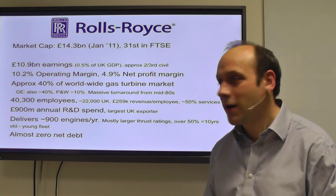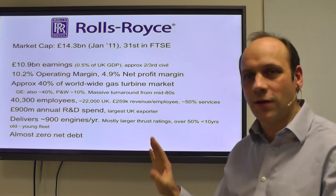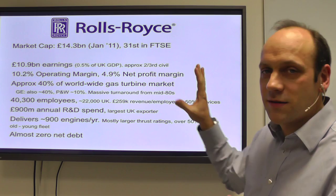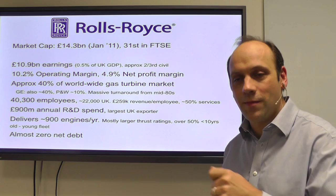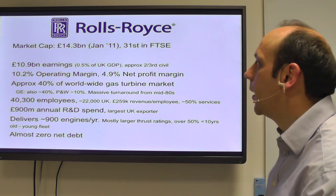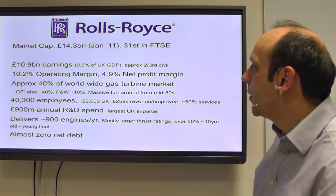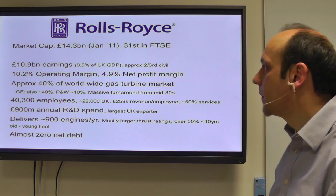About two-thirds of those earnings are civil. They do have some defence — military engines and submarine reactors — but mostly they are a civil gas turbine company. The car company is actually owned by BMW and based in Kent, and has nothing to do with this corporate apart from sharing the brand name, which Rolls-Royce owns the rights to. They have about 10% operating margin and about 5% net profit margin, and about half of the worldwide gas turbine market for twin-aisle airplanes.